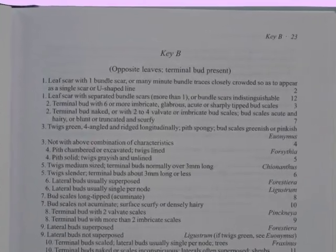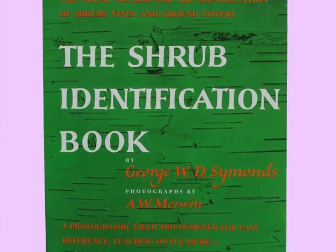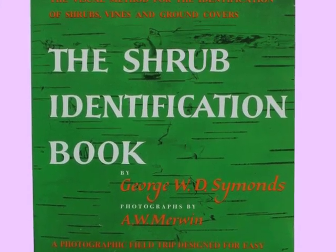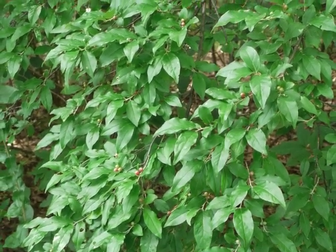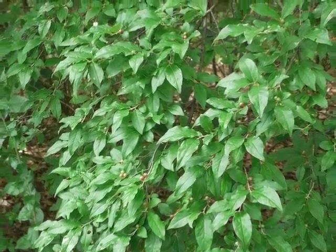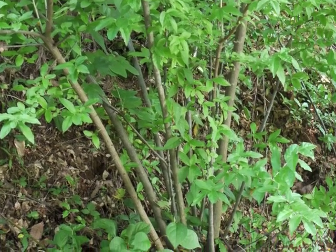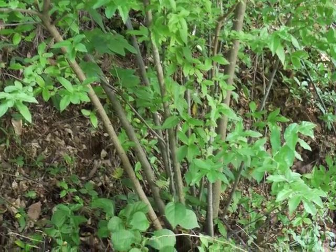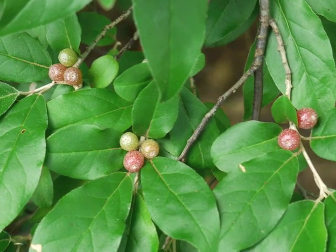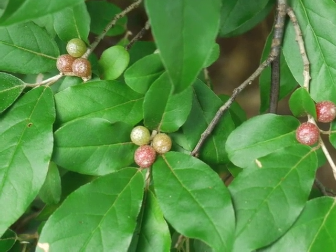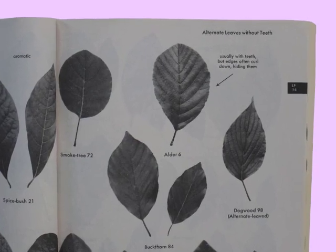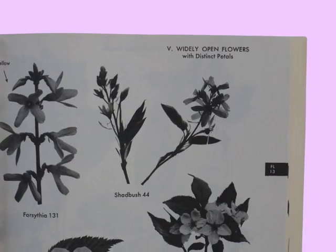The Shrub Identification Book uses a pictorial key. By matching the plant you are trying to identify with photos of five types of plant parts, you can determine the identity of your unknown plant. The plant parts photographed and displayed in this book include leaves, flowers, fruit, twigs, and bark.